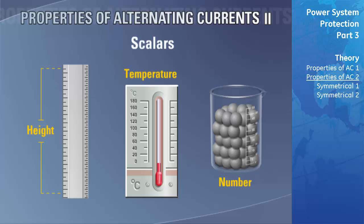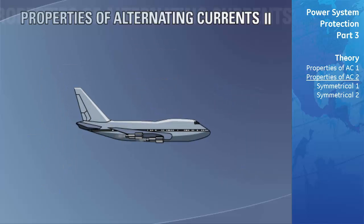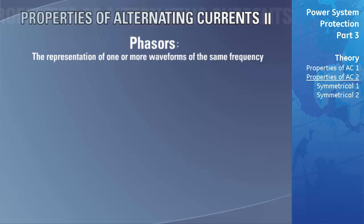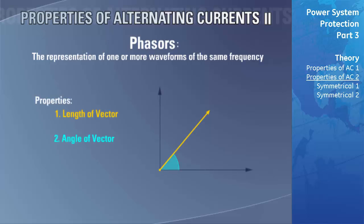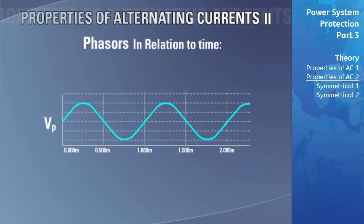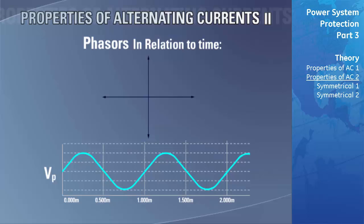A phasor is the representation of one or more waveforms of the same frequency. A phasor has a length and an angle: the length represents magnitude, while the angle represents the phase angle of that waveform relative to another or to a zero time reference. For a given load, we can use a phasor to represent the applied sinusoidal voltage V and its phase angle with respect to the load current I. For a purely resistive load, the voltage and current are in phase, represented as an arrow in the positive x direction.